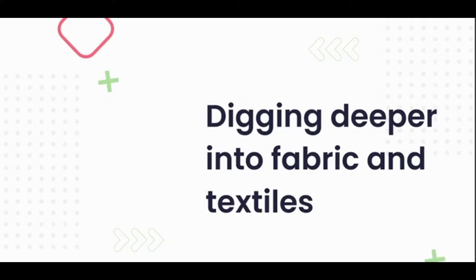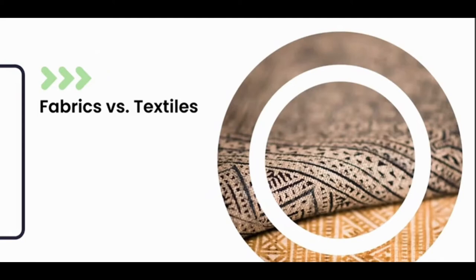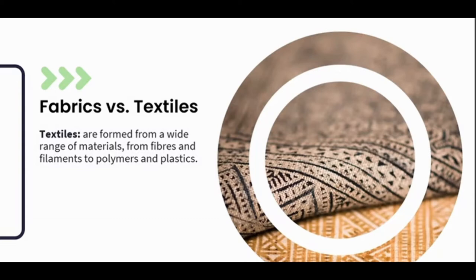Let's dig deeper into what textiles and fabrics are, and whether there is really a big difference. Even though the terms seem similar, they are in fact two very different things. A textile is typically produced by weaving, felting, knitting, and tufting, and is formed from a wide range of materials — from fibers and filaments to polymers and plastics. It is the finished product that we consider a textile — your carpeting, walk-off mats, rugs, window shades, wall coverings, and many other elements.